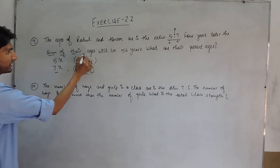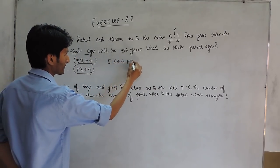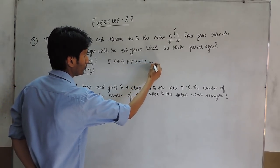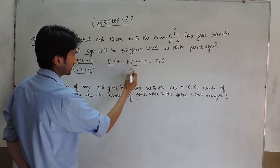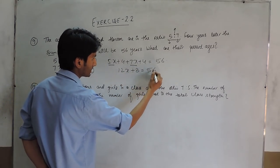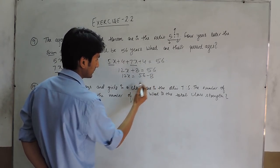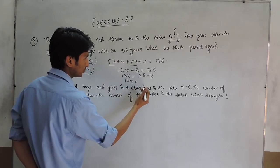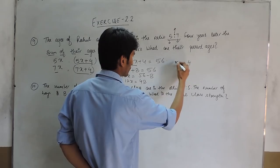And the sum of their ages then would be equal to 56 years. So, this is equal to 12x plus 8 is equal to 56, and 12x is equal to 56 minus 8. 12x is equal to 48 and x would be 4.